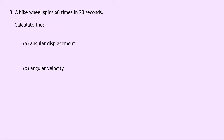Question three says that a bike wheel spins 60 times in 20 seconds. Calculate the angular displacement and the angular velocity. For part A, the angular displacement theta: the wheel spins 60 times, so theta equals 60 revolutions. One revolution is the same as 2 pi radians — one complete circle. So we multiply 60 by 2 pi radians to get 120 pi radians, which gives us 377 rad.